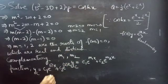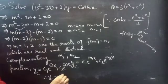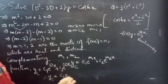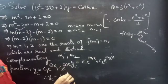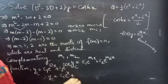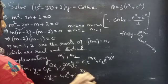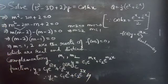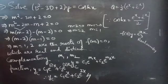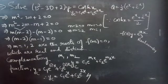Therefore, yc = c1·e^x + c2·e^(2x). So now we have found the complementary function. Now we need to find the particular integral.